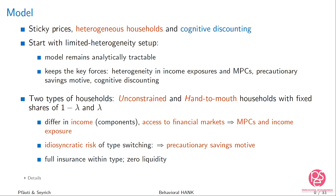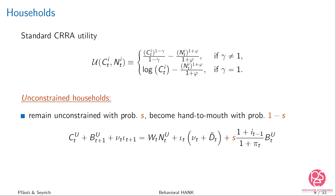Households have a standard CRRA utility function, getting utility from consumption and work. Unconstrained households face idiosyncratic risk: with probability one minus s they become hand-to-mouth. Their budget constraint is standard — they consume, save in one-period government bonds, and can acquire firm shares. They receive labor income, income from shares, after-tax dividend income, and interest rate income on a fraction s of their bonds. Hand-to-mouth households do not participate in financial markets — they do not save in bonds or own firms.